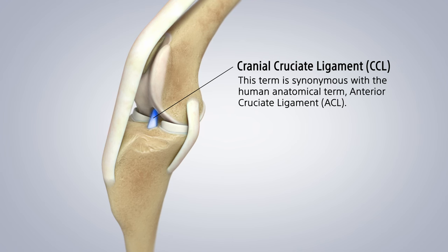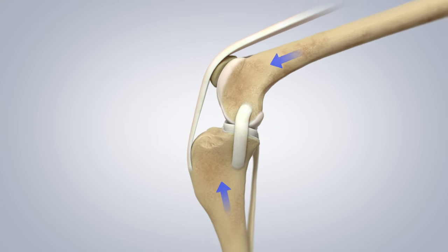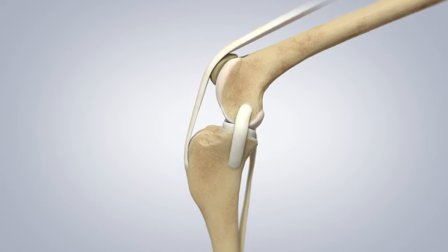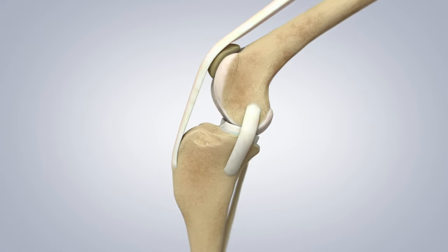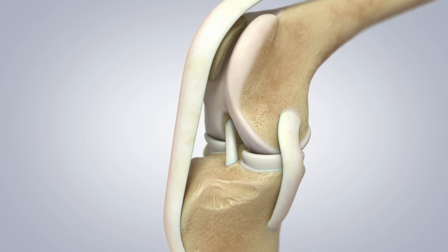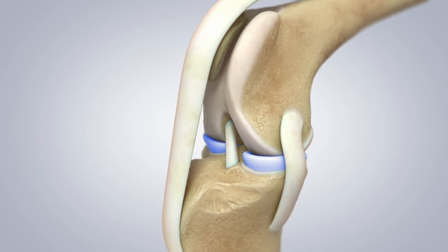This term is synonymous with the human anatomical term anterior cruciate ligament. The blue arrows represent forces that the dog knee sees throughout running and range of motion. As the force goes through the knee, the menisci distribute that force over the tibia and protect the cartilage.